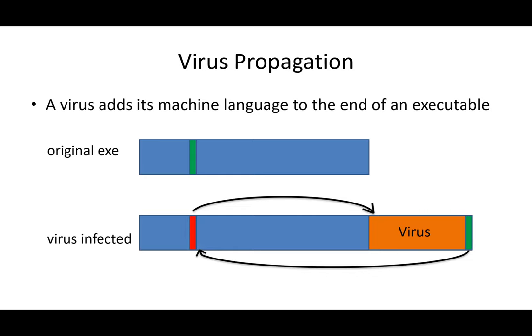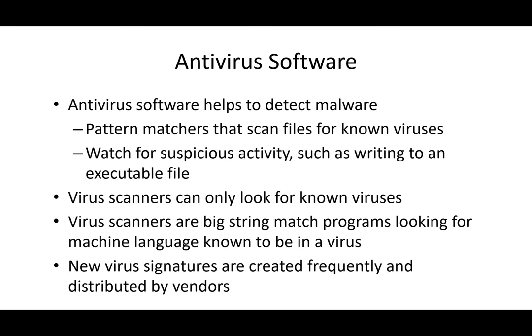Here's how a virus operates: you start with the original executable in a writable directory. When you execute the program, the virus writes itself to the end of the executable, copies the first instruction, and changes it to a jump to the virus code. The virus runs, then jumps back to resume normal execution. Frequently, viruses start a second thread to run malicious activity in the background so you don't notice anything operating inappropriately.